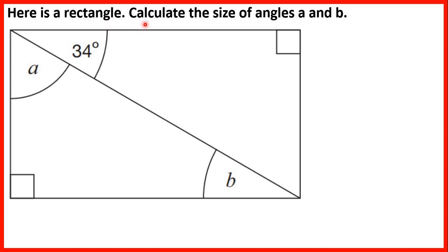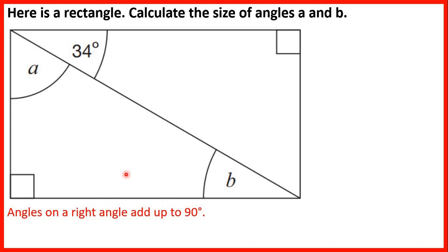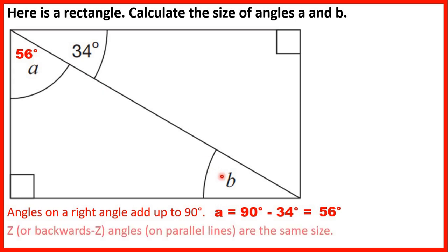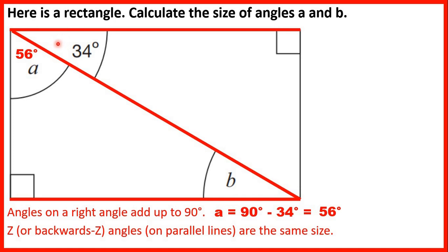Here is a rectangle. Calculate the size of angles A and B. The corners of a rectangle are always right angles, and angles on a right angle add up to 90 degrees. So 34 degrees plus angle A needs to make a total of 90. If we subtract 34 from 90 we get 56, so angle A is 56 degrees. To find angle B, we can remember that Z or backwards-Z angles on parallel lines are the same size. Because this angle here is 34 degrees, angle B will be 34 degrees as well.